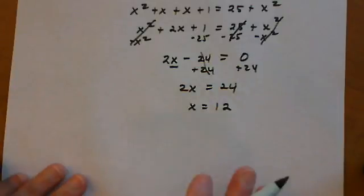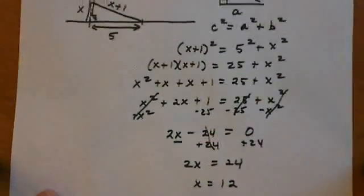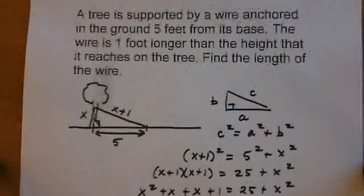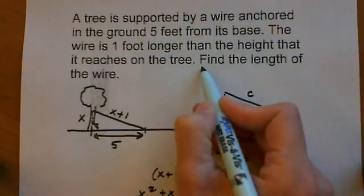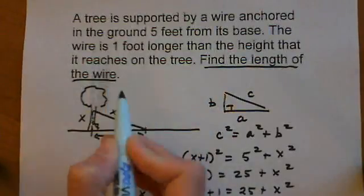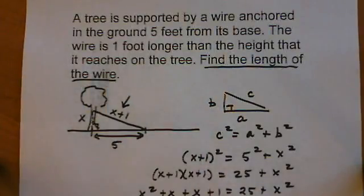Now let's check if that makes sense with the problem. x = 12, which is the height of the tree on our diagram. We're asked to find the length of the wire, which is x + 1.